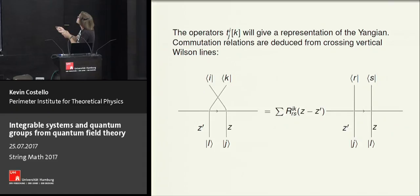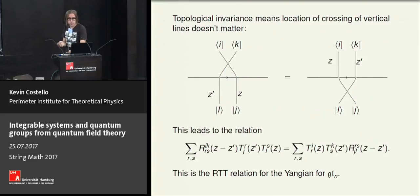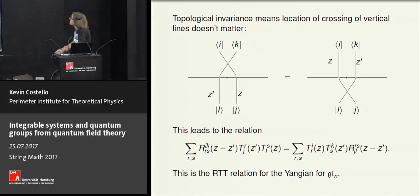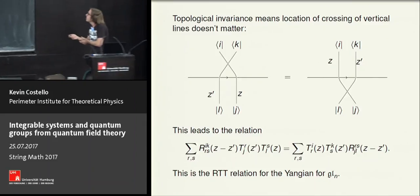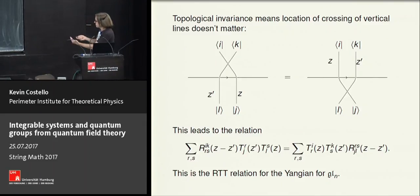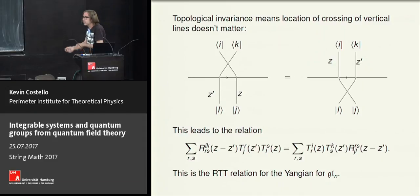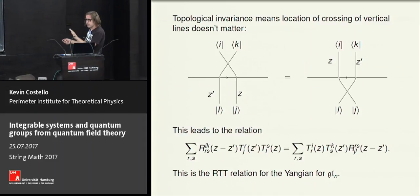Topological invariance means it doesn't matter where the crossing is — it can be above or below the horizontal Wilson line, and I'll get the same answer. This leads to the identity, schematically R·T·T = T·T·R, which is the very classical RTT presentation of the Yangian for GL(N), introduced I think by Reshetikhin and Faddeev — Takhtajan maybe — in the 80s, before Drinfeld's presentation.